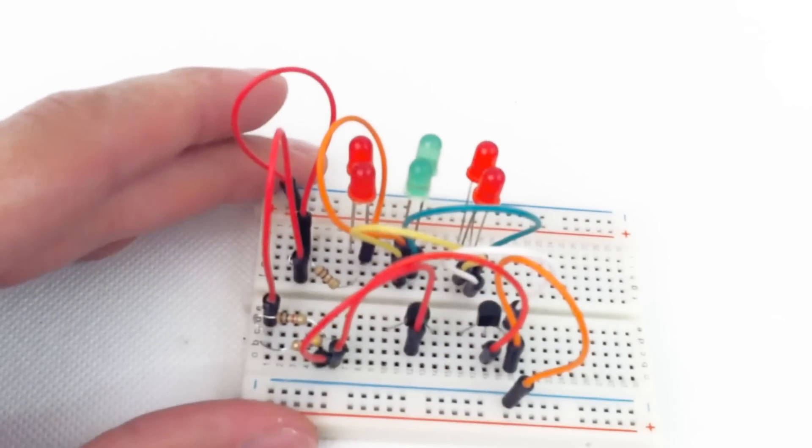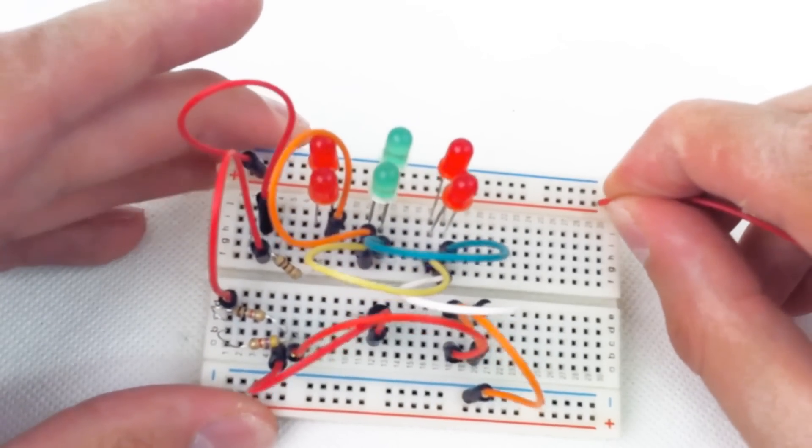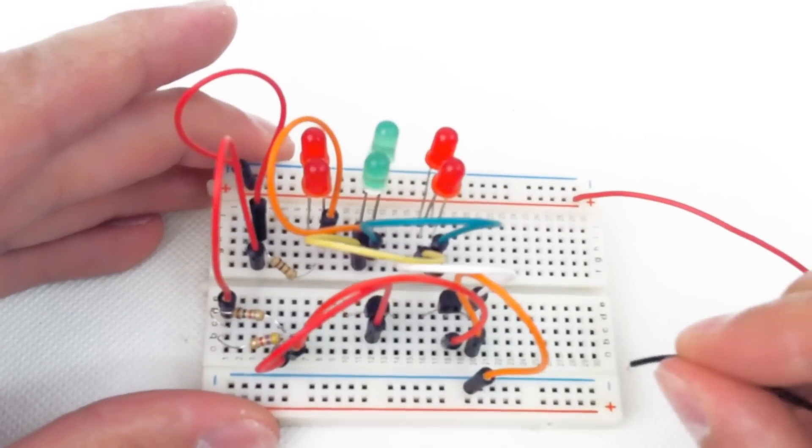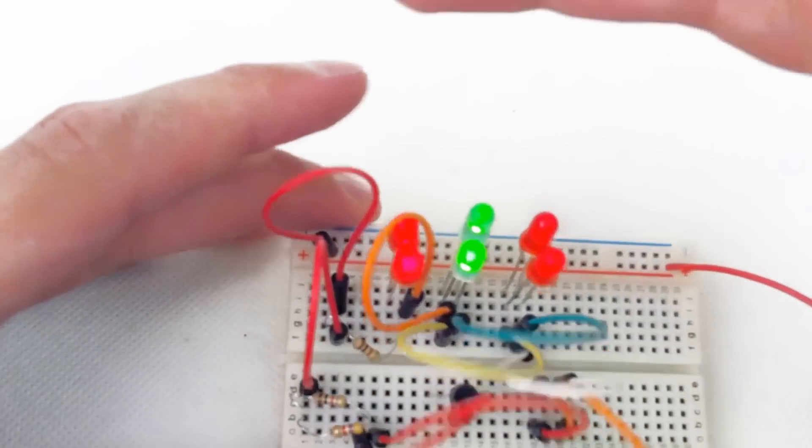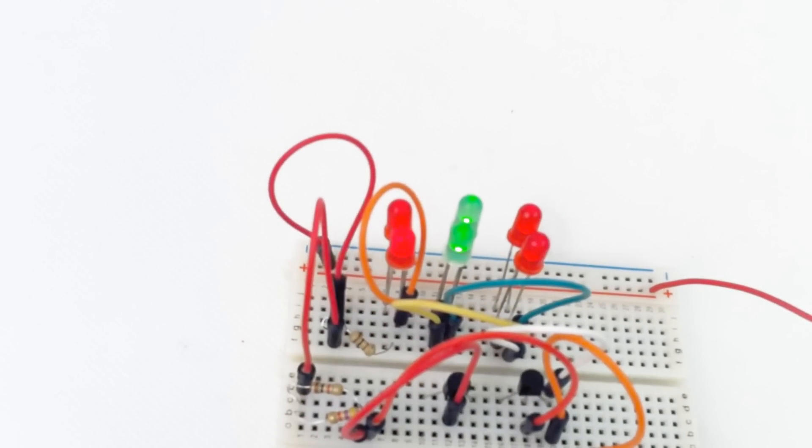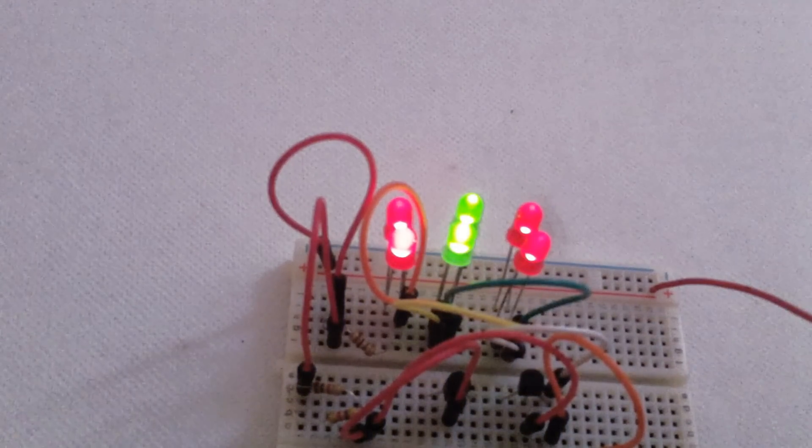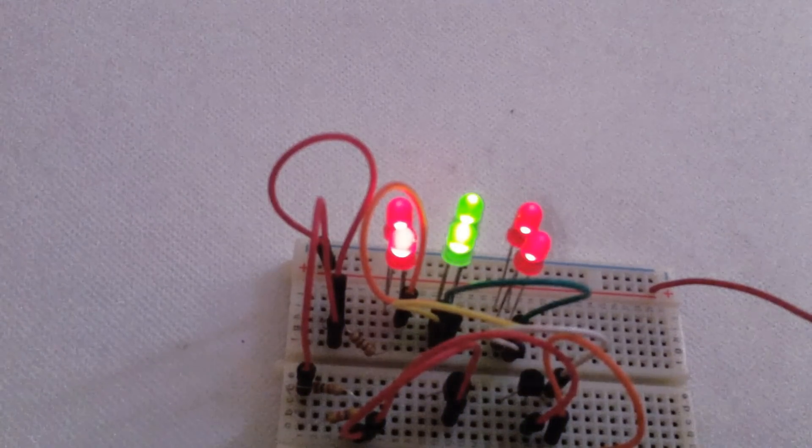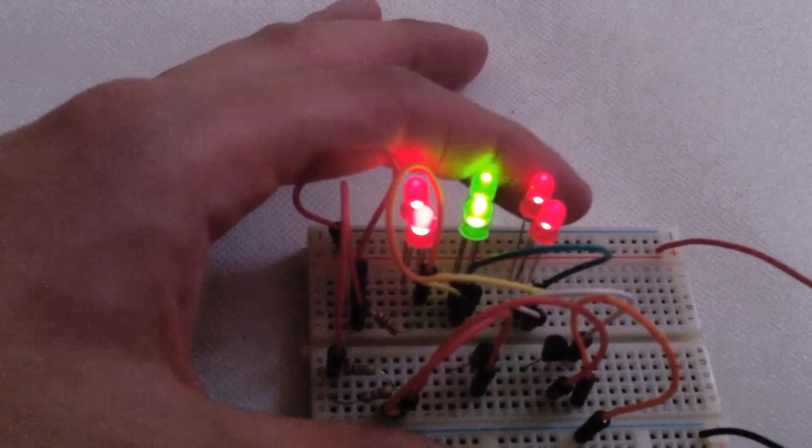And then we'll connect up our power supply - the positive terminal and the negative terminal. And then we have our Darlington pair. We'll switch off the lights so we can see better. And that is our Darlington pair.